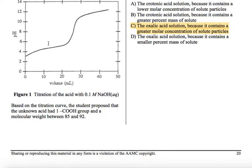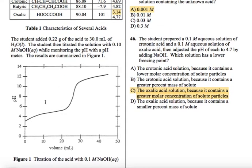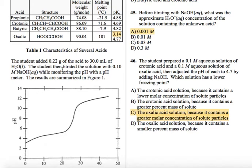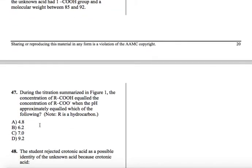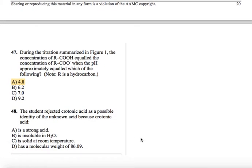The ideal buffer region is found at the half equivalence point. So that'd be around here. So that's going to be at pH, let's say like 4 something. A little bit over 4. And that's obviously equal to the pKa. So it's probably somewhere around there, 4 point something. So like I said, the MCAT's not going to give you numbers. They're not going to give you like 4.7 and 4.8 because it's obviously impossible to determine. They're going to give you something that's reasonable. And we said around 4, so 4.8 looks like the closest answer.